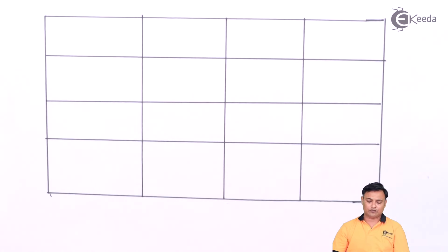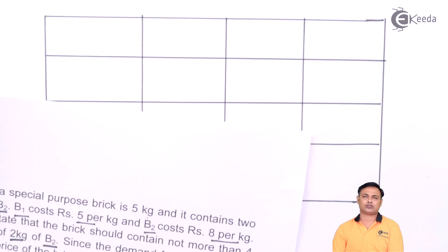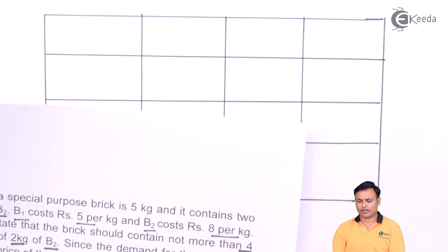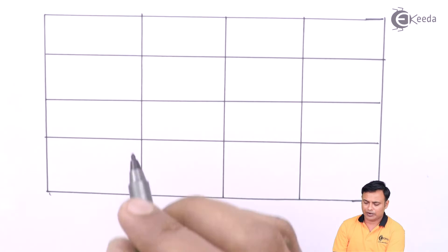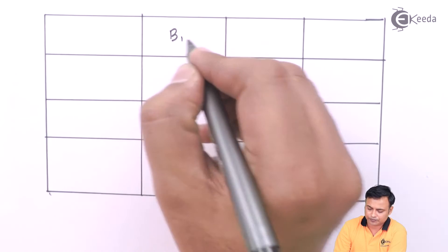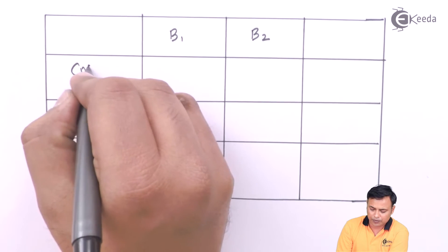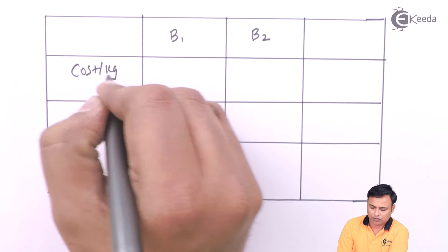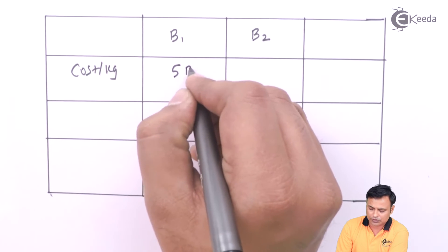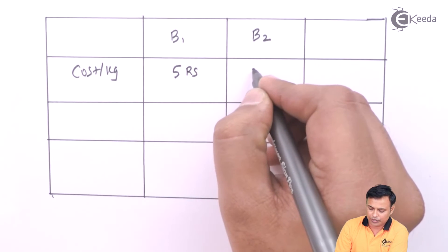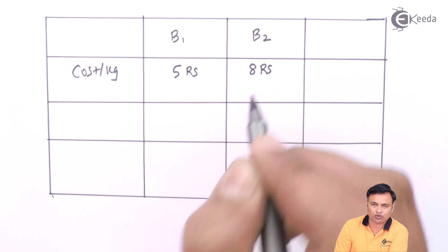When you decide in what proportion I should use the two materials B1 and B2, I will put down the materials here B1 and B2. The cost per kg for B1 is 5 rupees and for B2 it is 8 rupees.